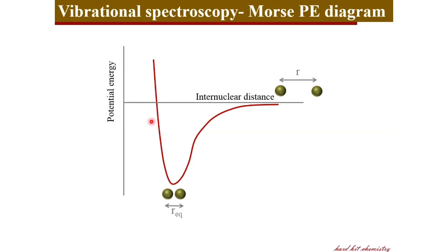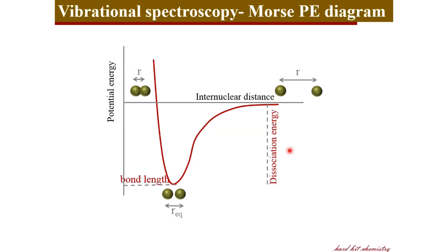If you bring the two atoms further together closer and closer, you can see there is a sharp increase in energy. This equilibrium distance — the distance corresponding to the well of the potential energy diagram or the lowest energy point — corresponds to the bond length. The difference in energy between the situation where the two atoms are clearly separated and where they form a stable bond gives the dissociation energy of the molecule.